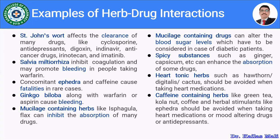Spicy substances like ginger and capsicum have the ability to increase the absorption of many drugs, thereby increasing their effects and side effects. Heart tonic herbs such as Hawthorn, Digitalis, and Cactus should be avoided when taking heart medication. Caffeine-containing herbs — green tea, cola nut, coffee — and herbal stimulants like ephedra should be avoided when taking heart medication, mood-altering drugs, or antidepressants, as there are certain side effects when combining caffeine-containing herbs with these medications.